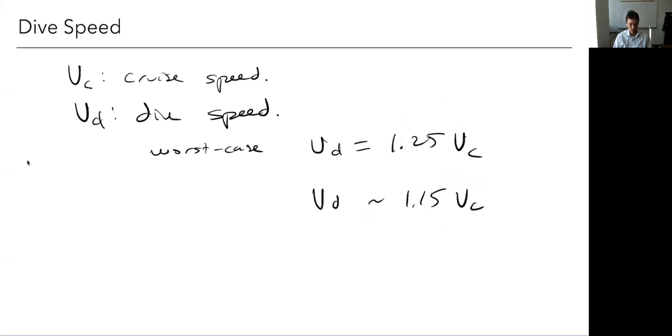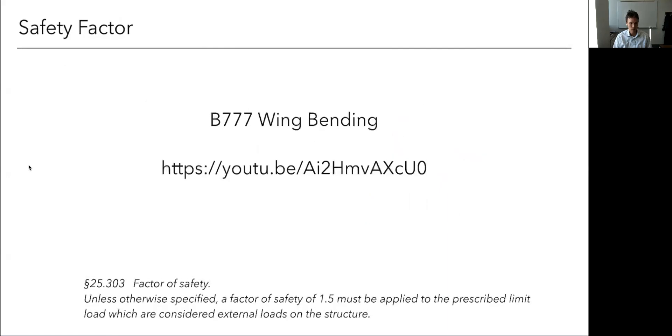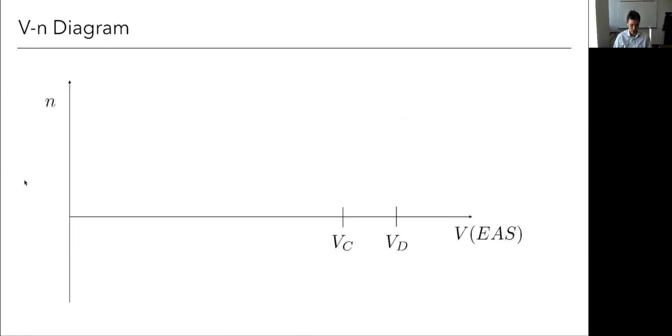So this is what's called a V-n diagram. N is the load factor that we talked about. V is a speed, and this time we're going to look at in terms of equivalent air speed. Remember, this is the one that's our dynamic pressure. It's going to be more useful in this case.